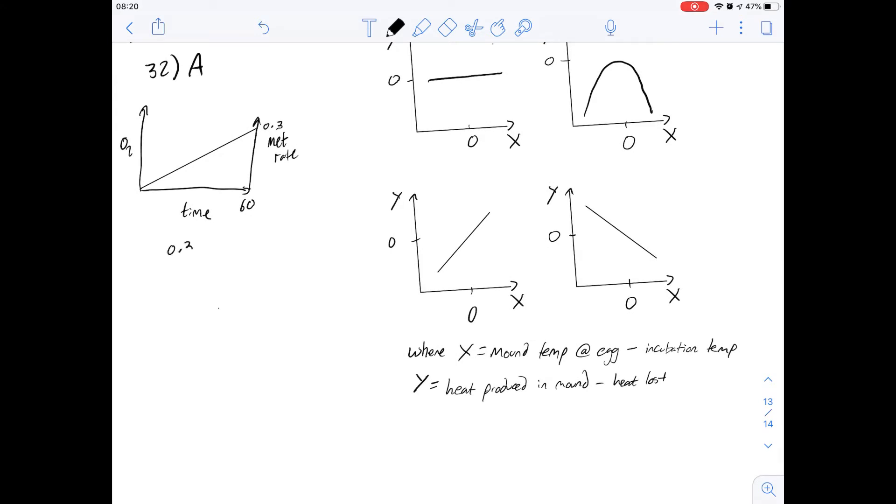So if we've got 0.3 joules per second, if we times that by 60, that's what it's going to be per minute, and then 60 again, that's going to be per hour, then multiply by 24, and that's going to be per day. And then we need to multiply it by 60 again, and that will give us over the 60-day incubation. So that's per second, per minute, per hour, per day, and then per whole incubation.